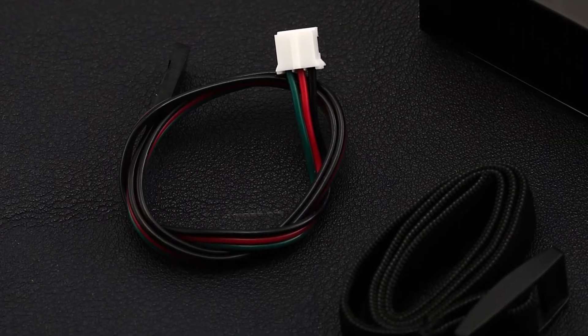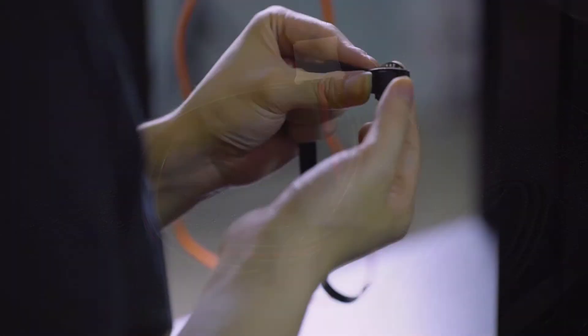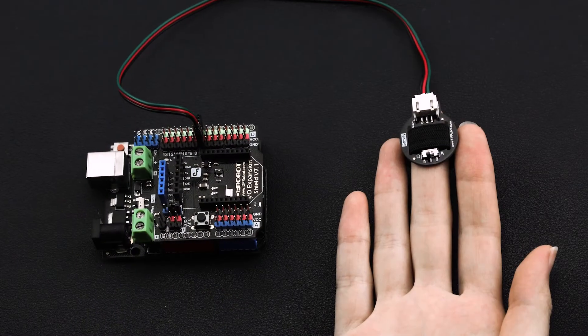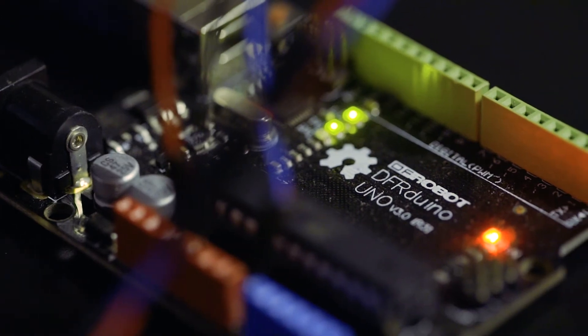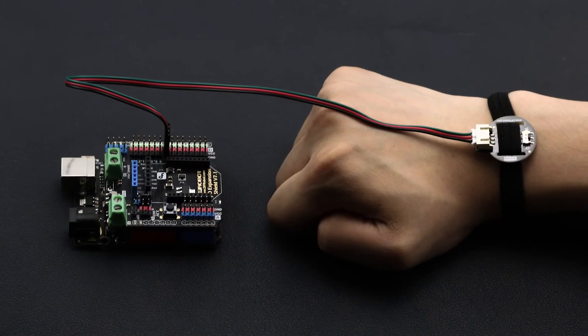To start, just attach the sensor to our body and hook up with an Arduino board. Before moving into setup, let's first take a look at the optical heart rate sensor and how it works.